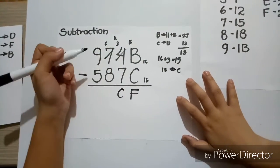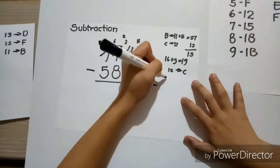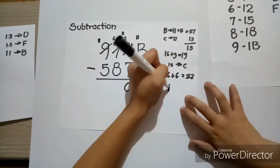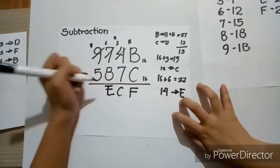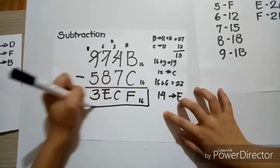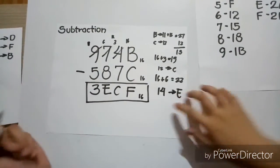Next, we cannot subtract E from 6, so we'll have to borrow. So, 16 plus 6 is equal to 22. And 22 minus 8 is equal to 14. And 14 is represented by E, so we'll have to write E. Then, 8 minus 5 is equal to 3. And that's the final answer, 3ECF base 16.